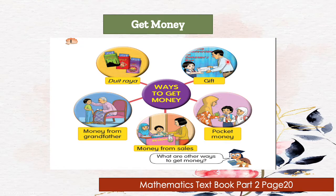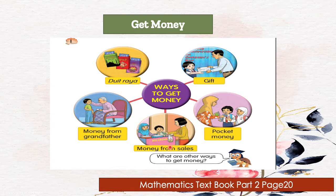Okay class, how can we get money? There are many ways to get money. You can get money from Duit Raya in any festival celebration. You also can get money from grandfather, grandmother, or relatives. You also can get money from sales if you help your mother and father sell something like ice cream or cake. You can also get money from prizes you win at competitions at school, and also pocket money from your parents.